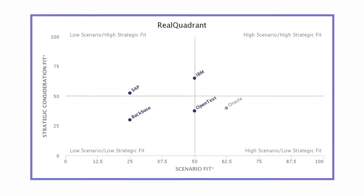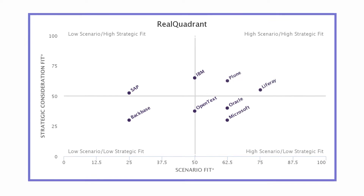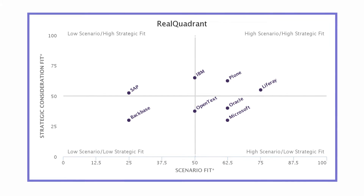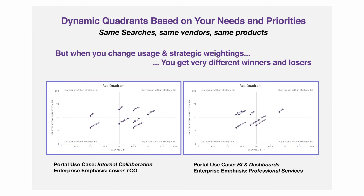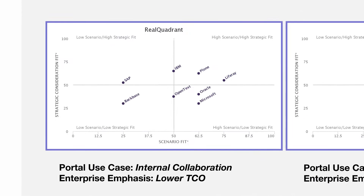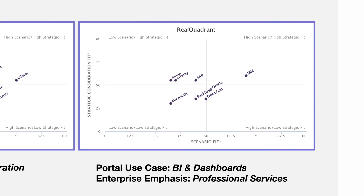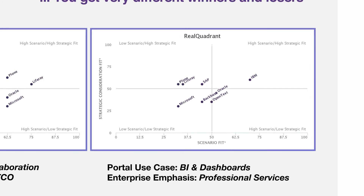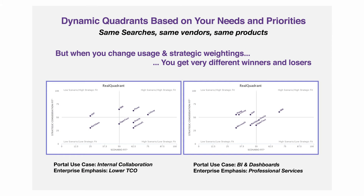The result is a real quadrant. These aren't static quadrants — they build according to your specific needs. For example, in these portal quadrants, the first one emphasizes a collaboration use case for a customer focused on lower cost of ownership, but in the second example the customer is seeking more BI dashboards while emphasizing vendor professional services.